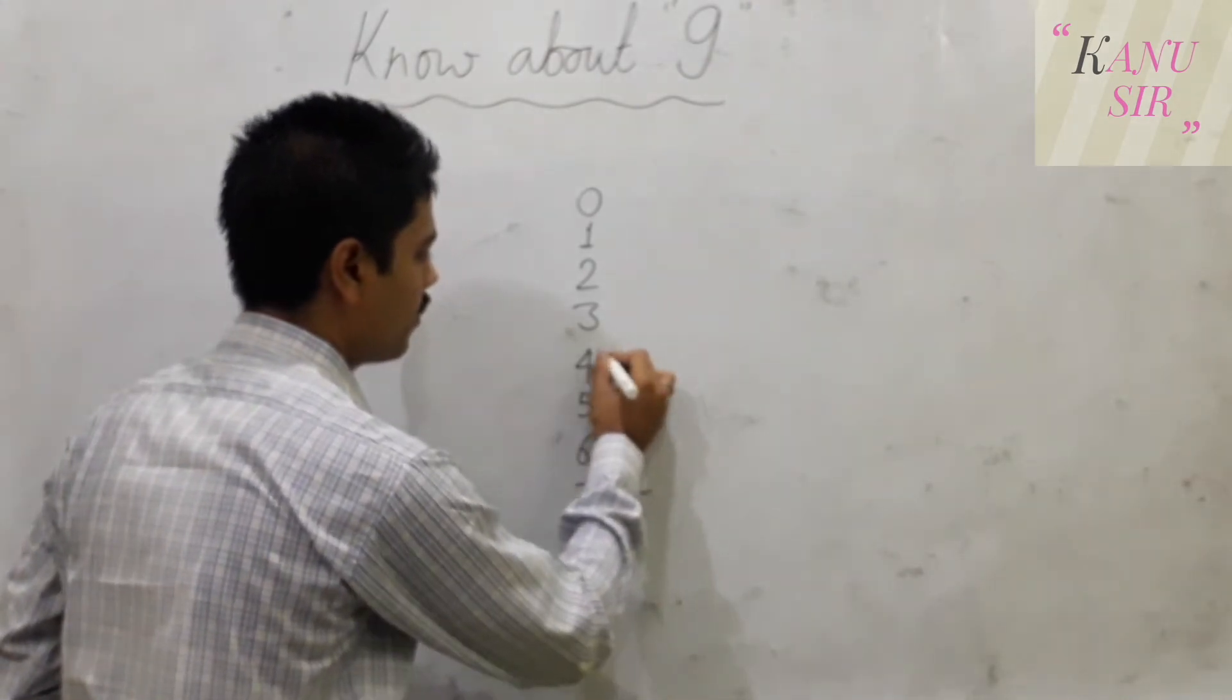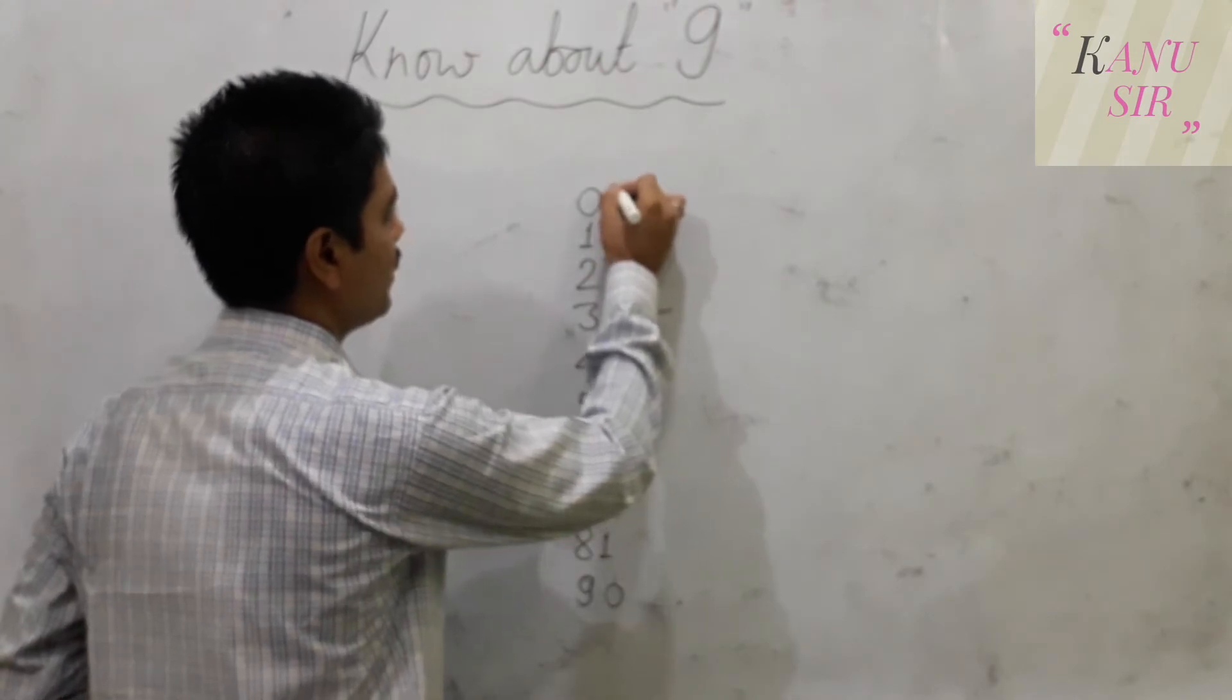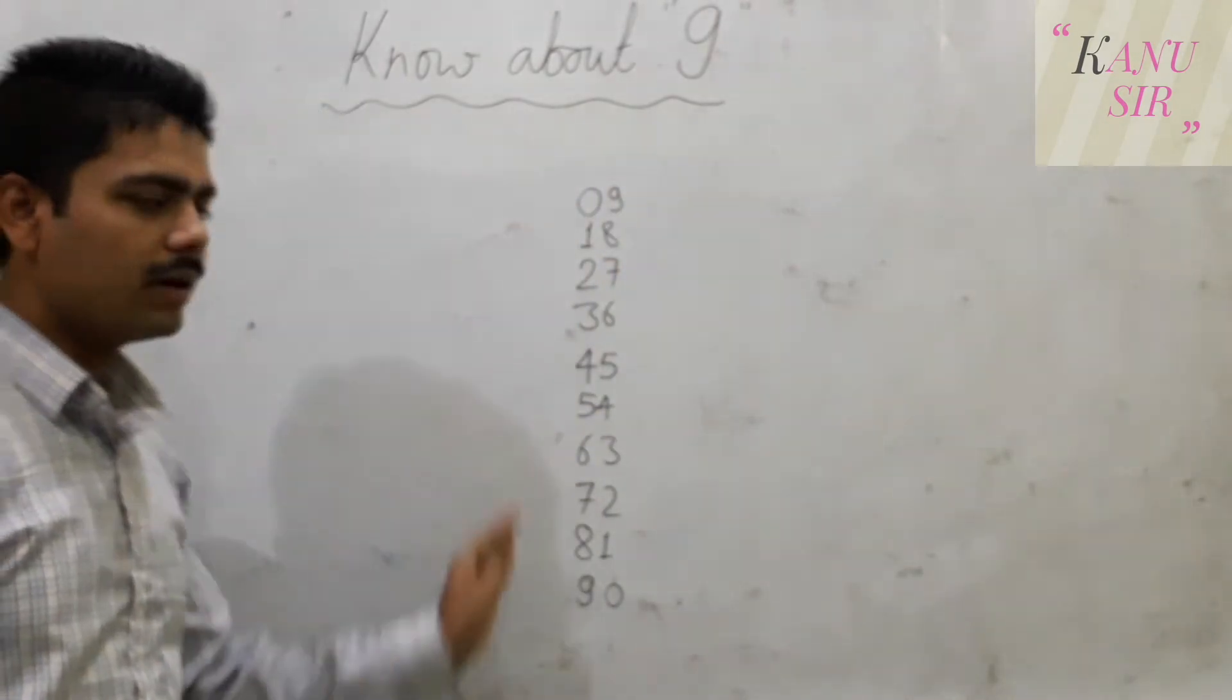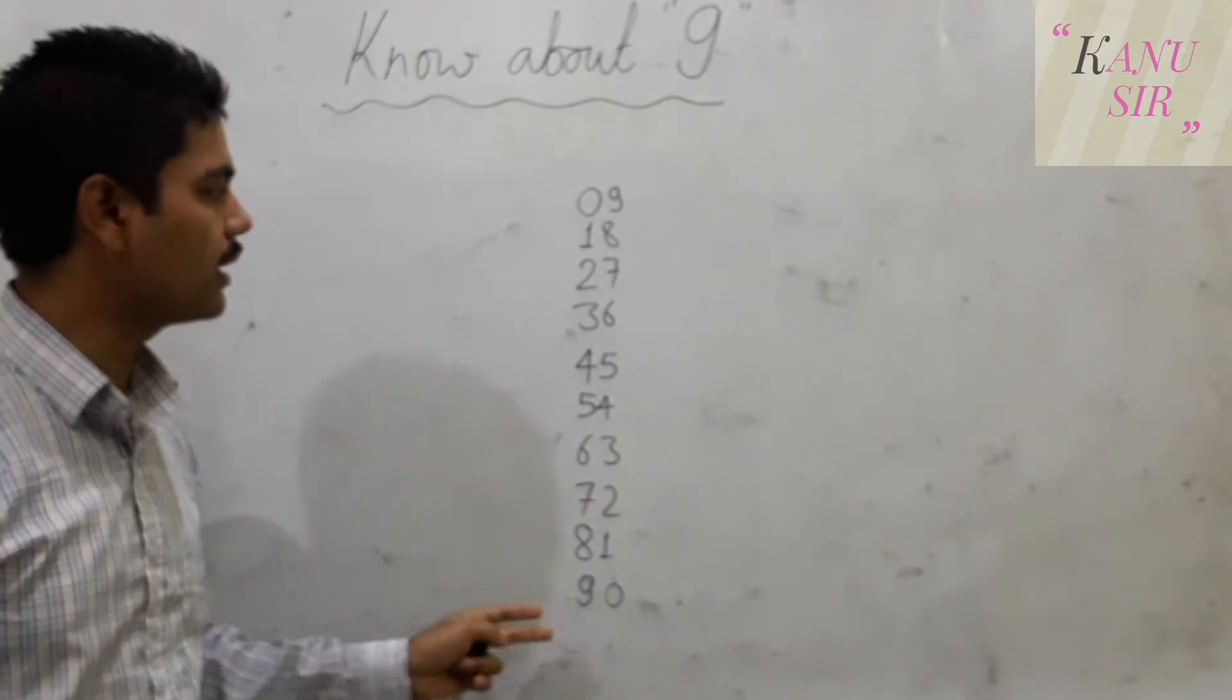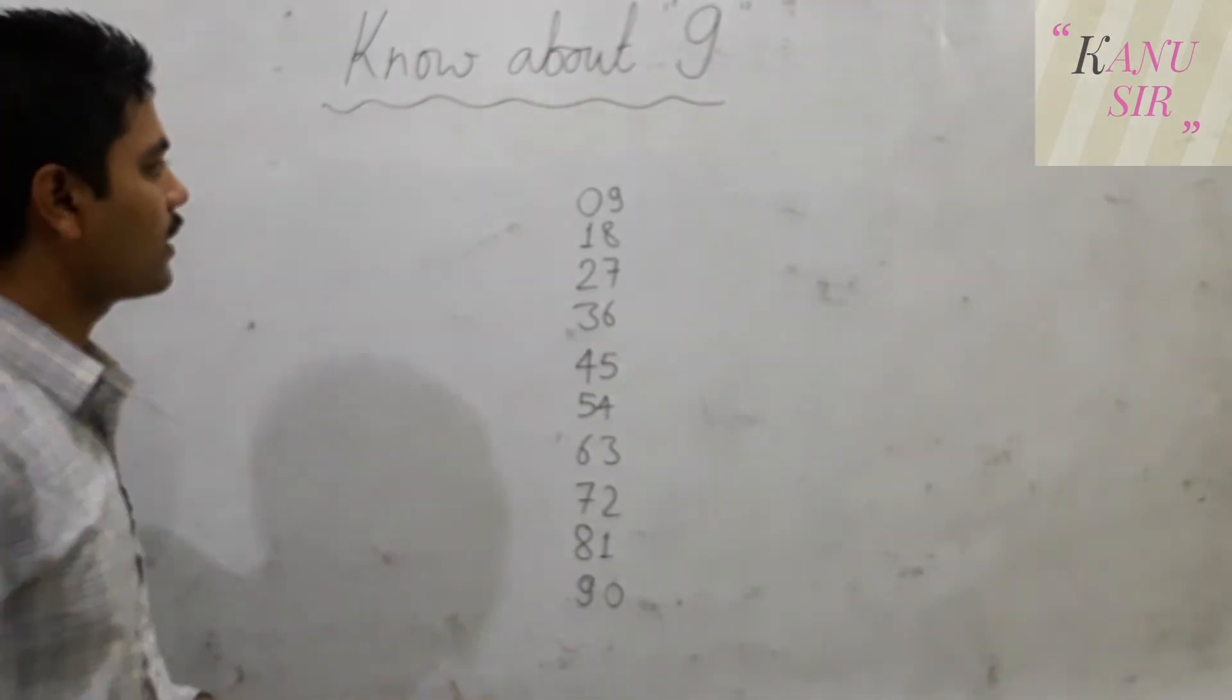If you already know the table of 9, then you have already noticed what is behind here. If not, then you can check.